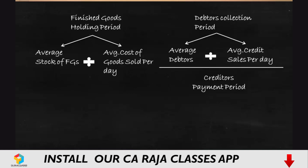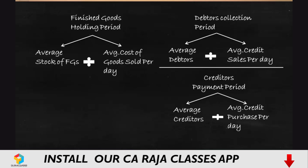Creditors payment period is calculated as average creditors divided by average credit purchases per day. From total purchases, identify what is credit purchase. Credit purchases divided by number of days in a year gives credit purchases per day. So average creditors divided by credit purchases per day gives you the creditors payment period.